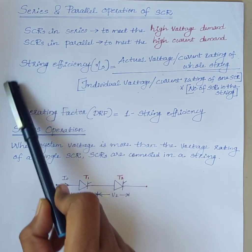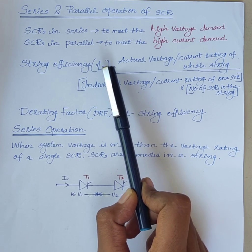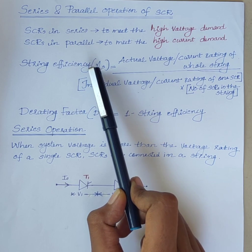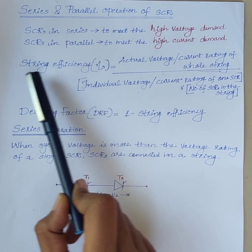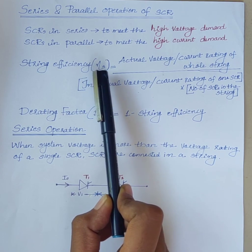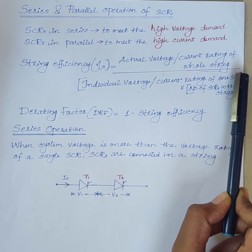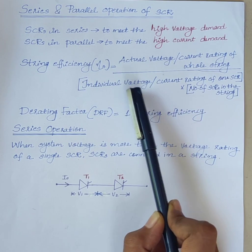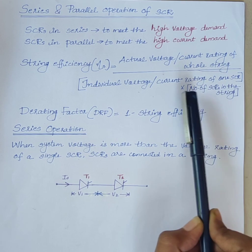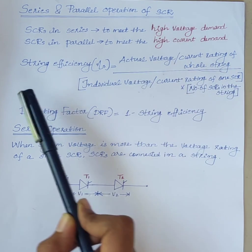String efficiency is a term used to measure the degree of utilization of SCRs in a string. String efficiency η_s is equal to actual voltage or current rating of the whole string divided by individual voltage or current rating of one SCR multiplied by the number of SCRs in the string.